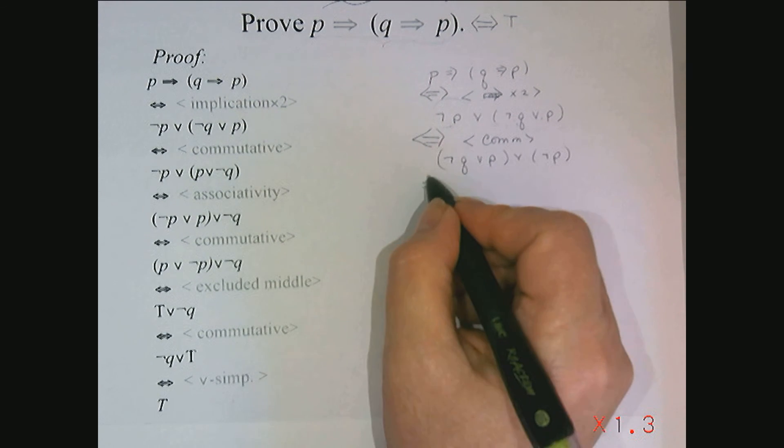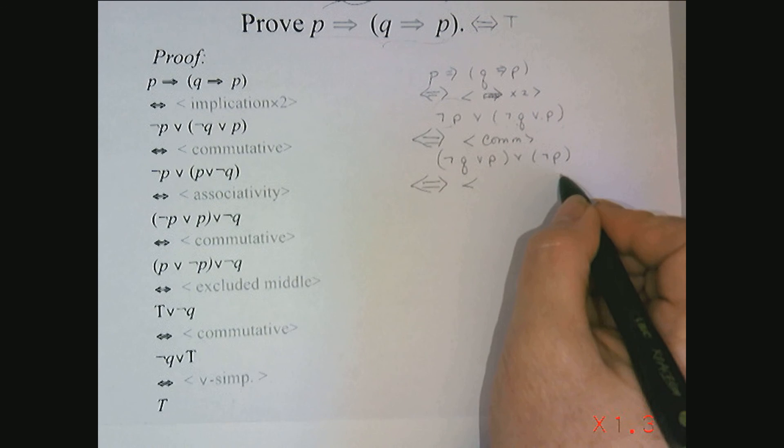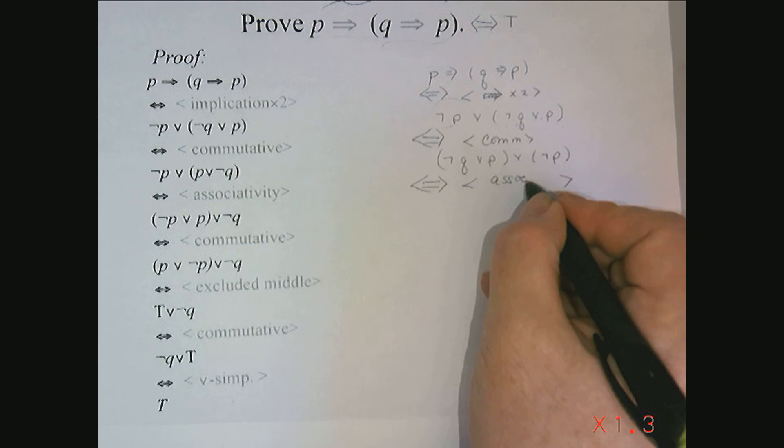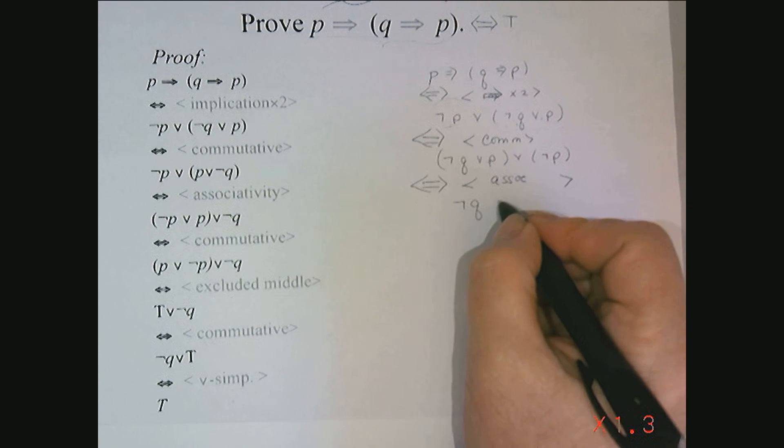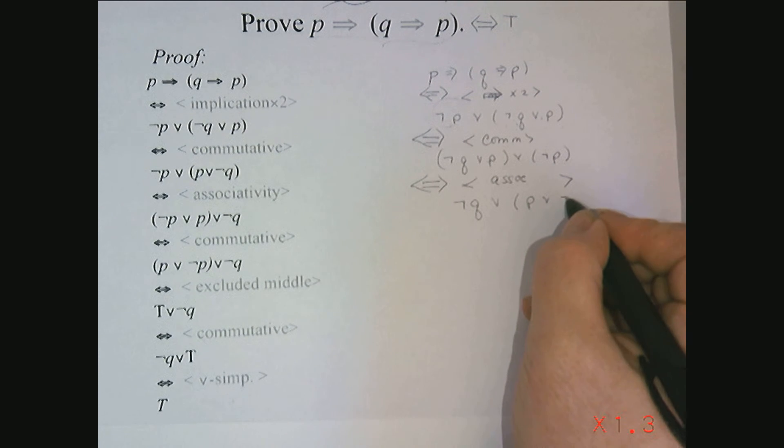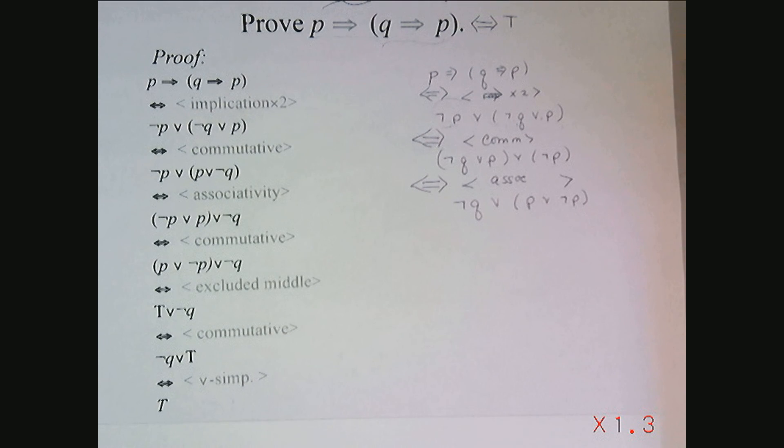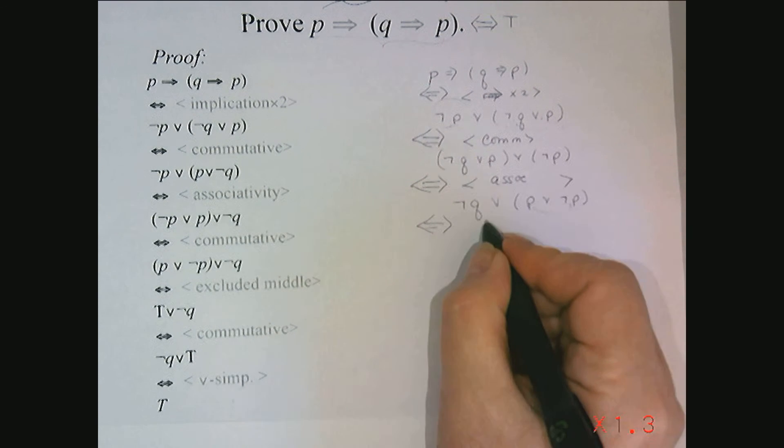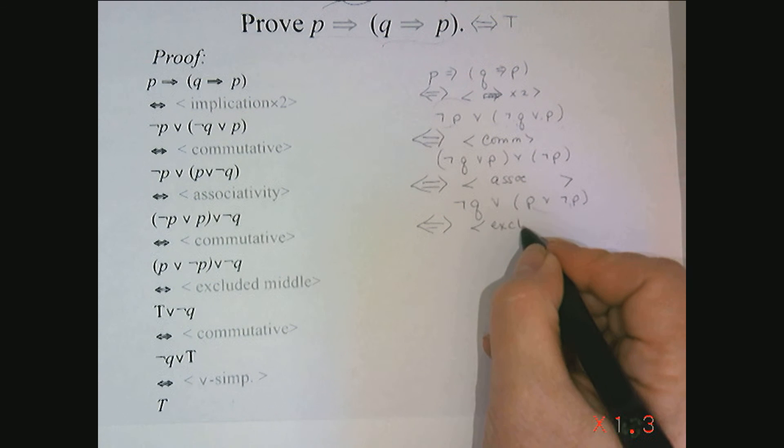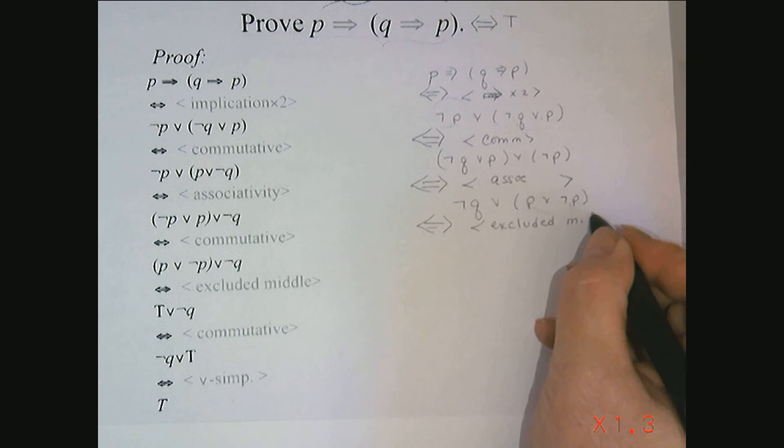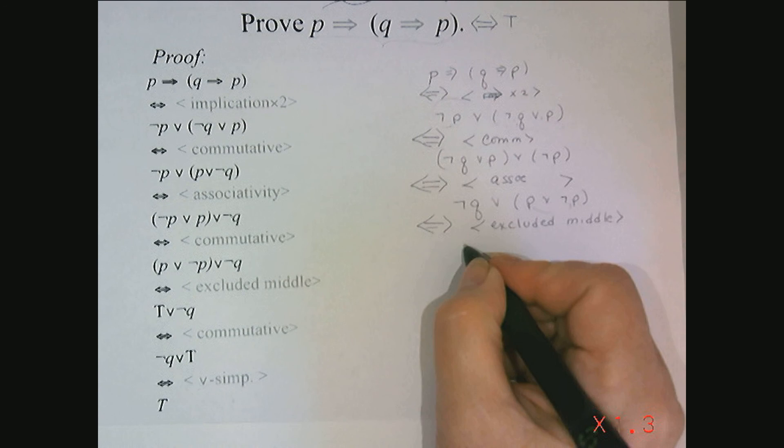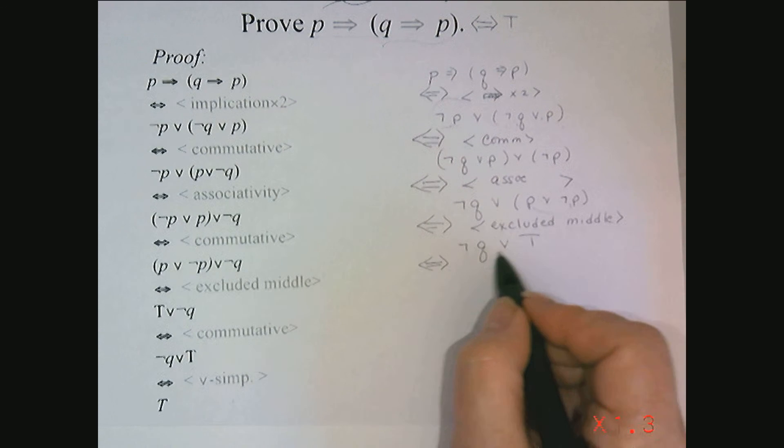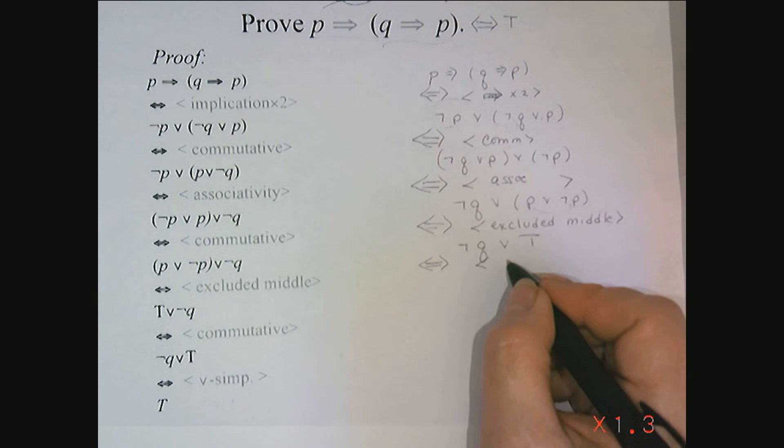And then if I want to regroup, I can use associativity again and this is equivalent to not Q or P or not P. Now the advantage of doing this is I don't have to switch the order. This is already in the right order to apply excluded middle. So I have not Q or true. And again, I don't have to switch the order. It's in the exact right order so that I can apply or simplification.